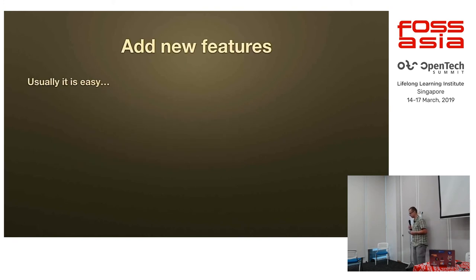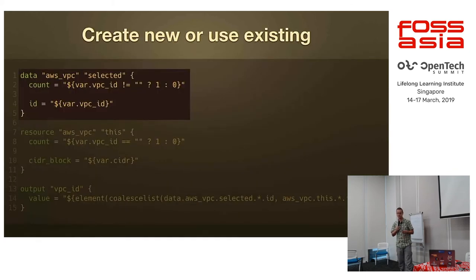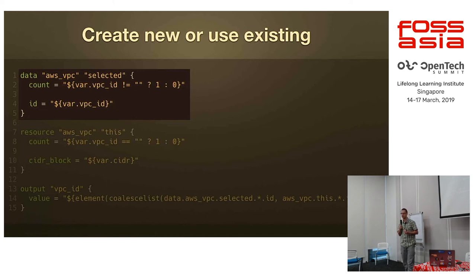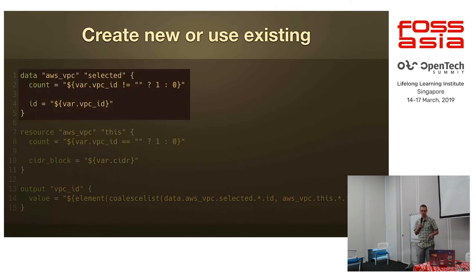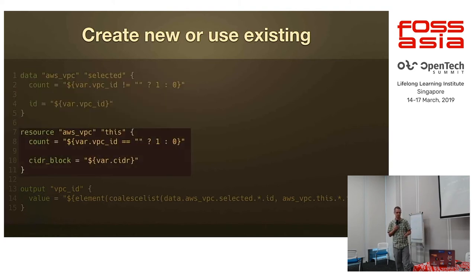When we have a requirement to add new features to our infrastructure, it's usually easy. But sometimes it makes sense to create new resources or use existing resources conditionally. For example, if we want to make a reusable infrastructure module where we get information about a VPC ID if it was present, and create it if it was not. In this case, we use a data source to find information about an existing VPC ID, or create one if it was not specified, and output just the VPC ID back to the user.